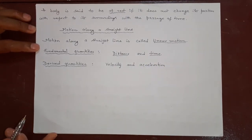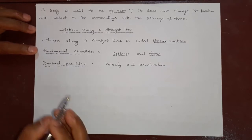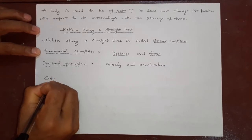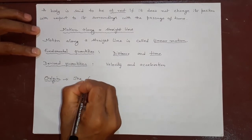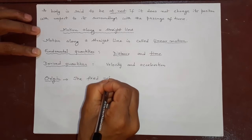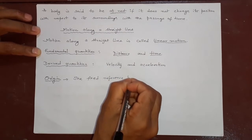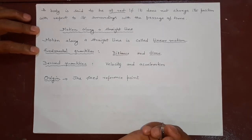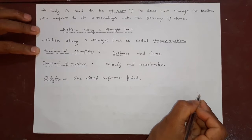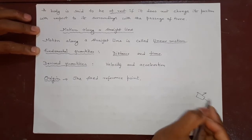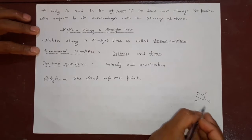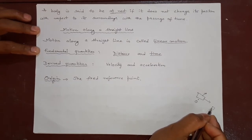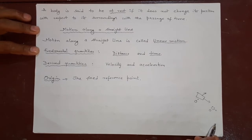Let us understand straight line motion with other terms. First is origin. Origin means the starting point from where you take every reference — it is also called the fixed reference point, chosen according to our convenience. Suppose I want to study the motion of an object and I take the starting point as O — then O will be my origin. Where you think is the starting point, according to your convenience, is called the origin.